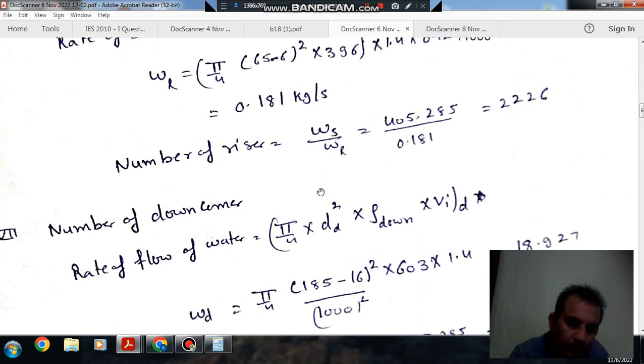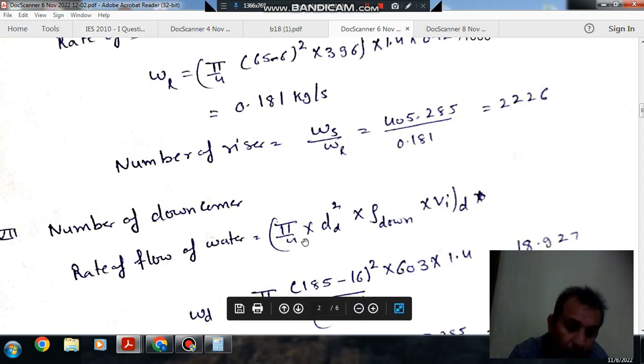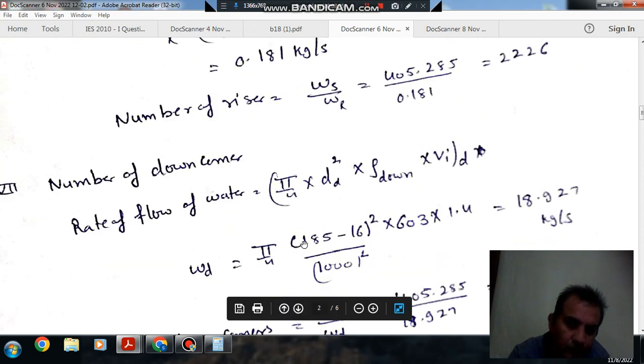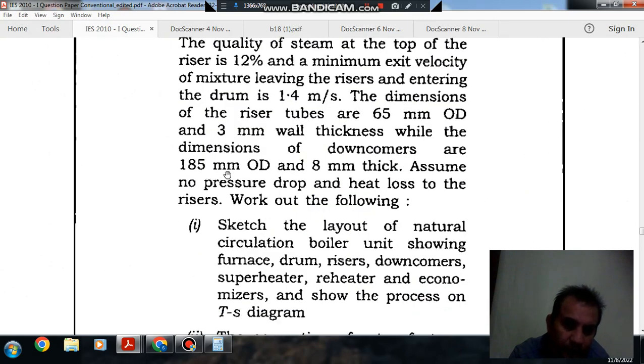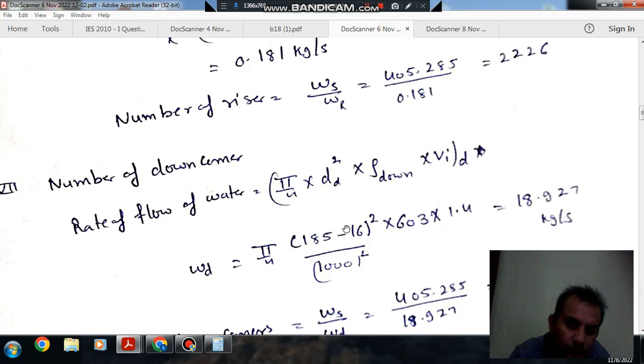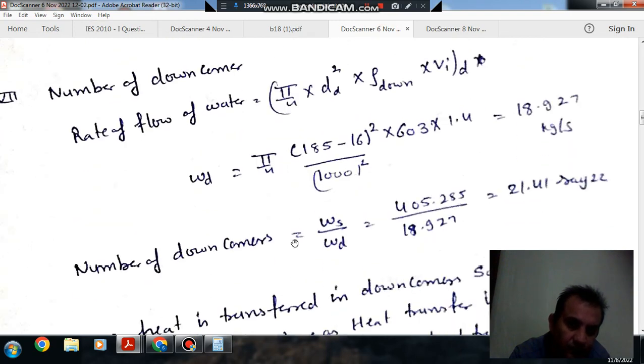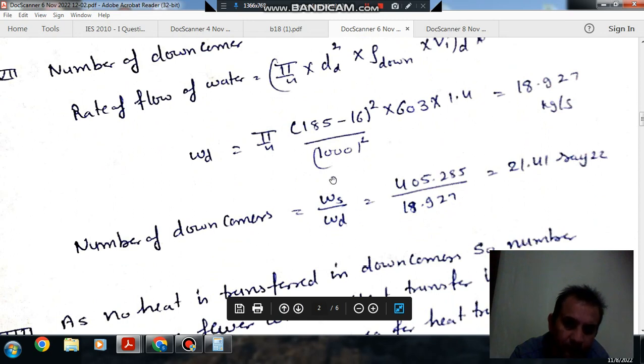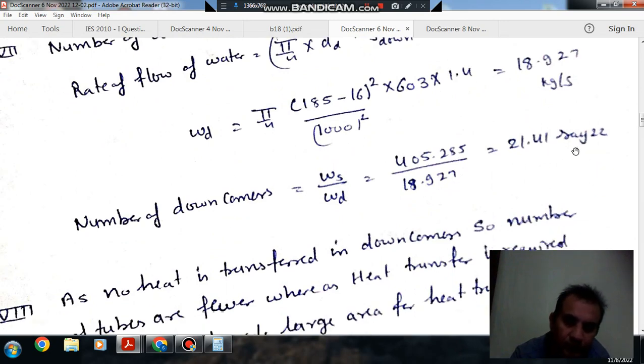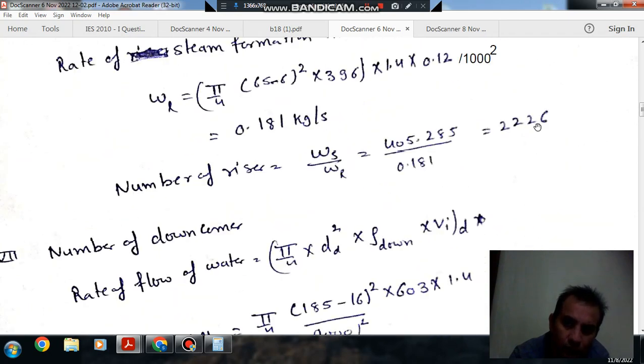So next is number of downcomers. Again by following the same procedure, as in downcomers the water is flowing, the mass flow rate in one downcomer is calculated. And outer diameter of the downcomer is given as 185 mm and thickness is given as 8, so inner diameter will come out as 169 mm. So number of downcomers comes out as 22.